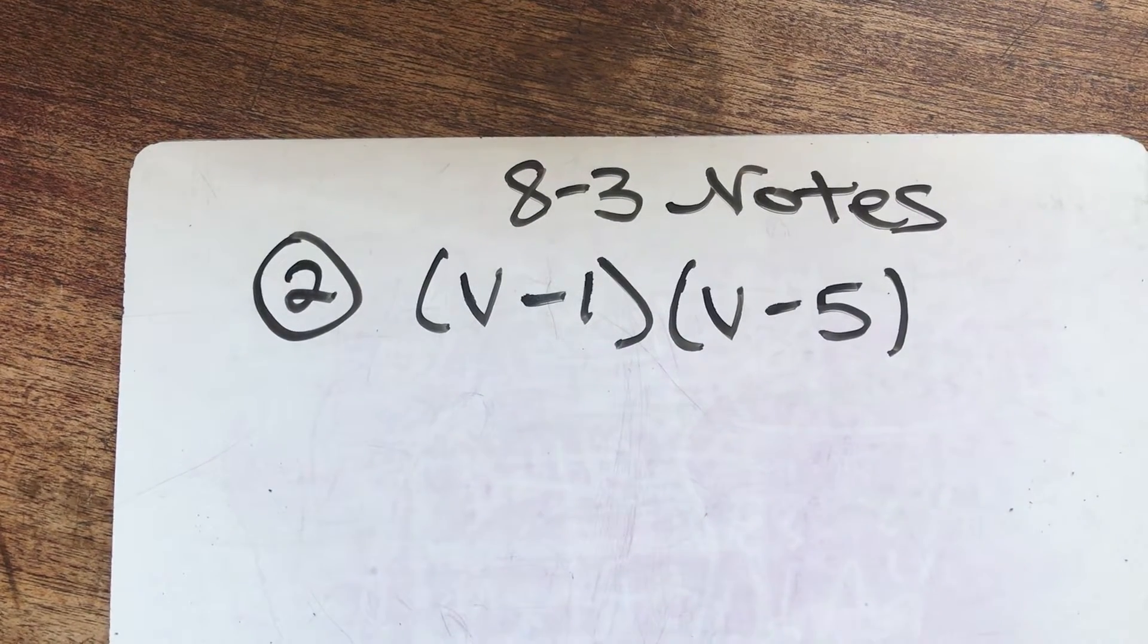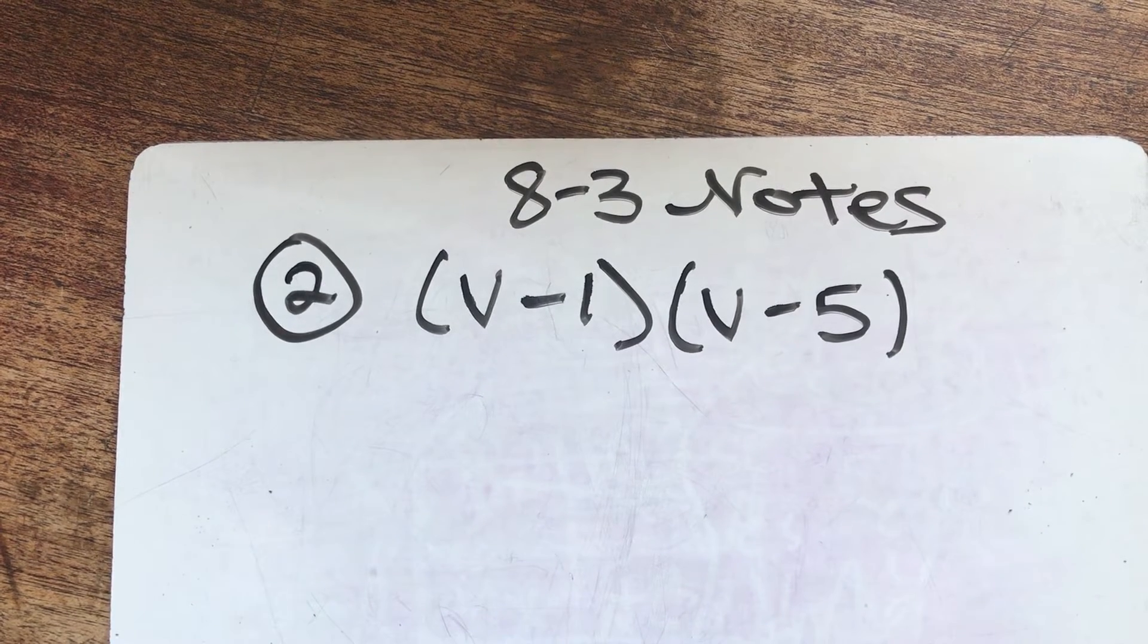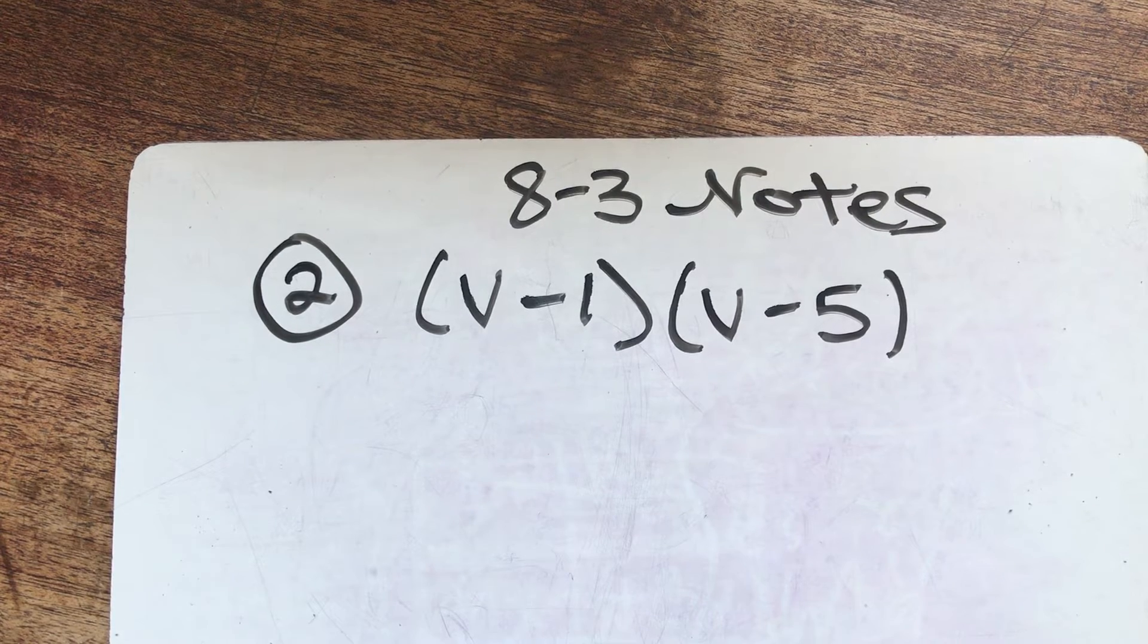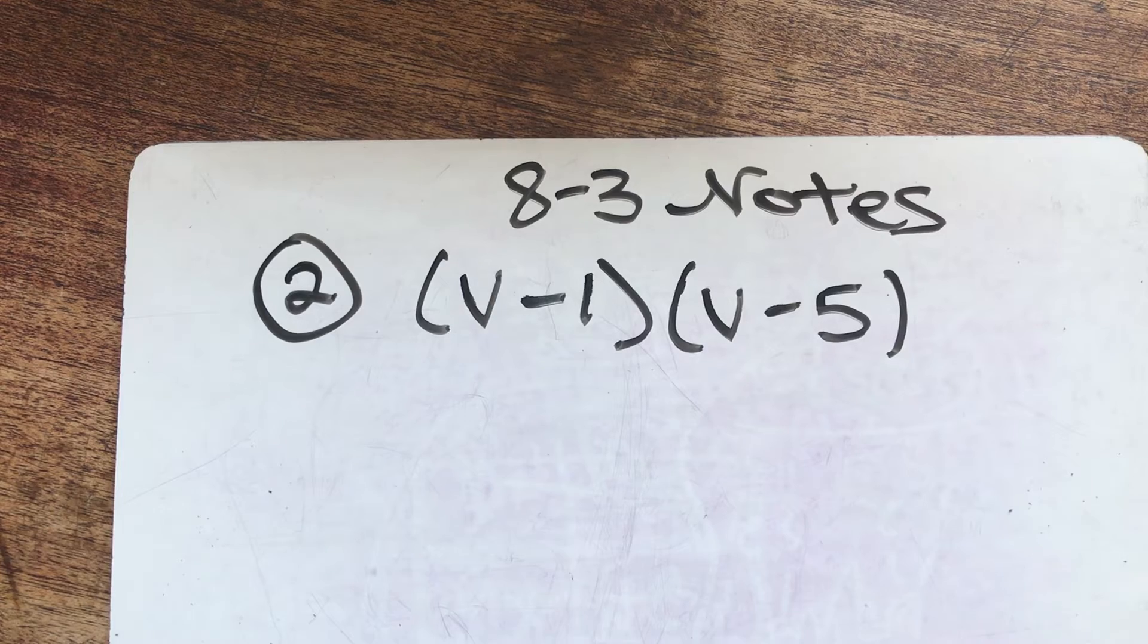Welcome back to part two of the 8-3 notes. I just showed you three different ways to do question number one on your notes. Now you get to pick whatever strategy you're going to use. I'm going to stick with Punnett square, but it's up to you which style you use because we're going to get the same answer.